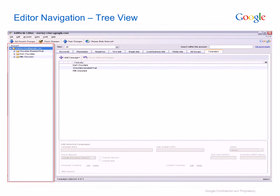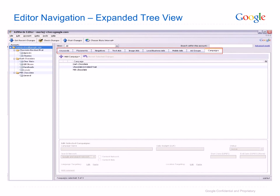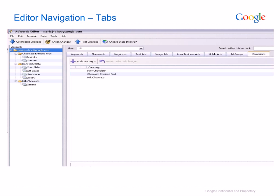Within the AdWords Editor user interface on the left-hand side, you will see the tree view which mirrors the campaign structure of your AdWords account. Details of these campaigns can be seen by clicking on the plus box and expanding the view. When viewing the expanded account, use the tabs to navigate between views of keywords, placements, text ads, etc. When selecting the root folder of an account in tree view, the tabs highlighted here allow you to browse through each type of content in your campaign. Currently the Campaigns tab is selected and so campaign names are listed. If you were to select the Ad Group tab, you would see a list of all ad groups in the account. This is the same for all the tabs — keywords, etc.